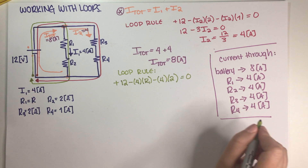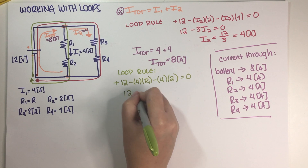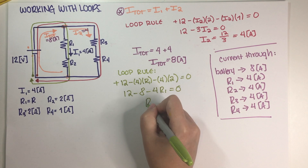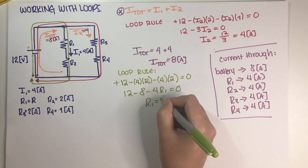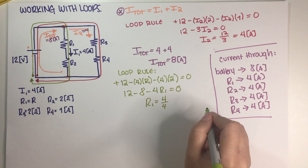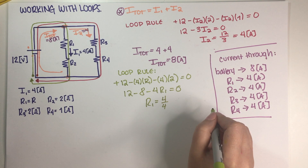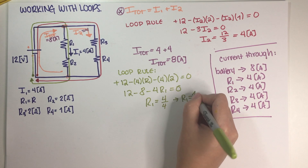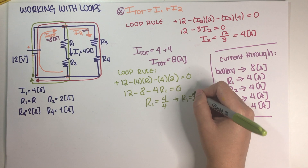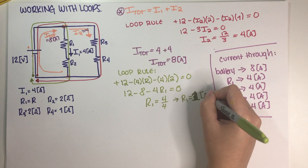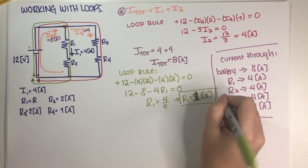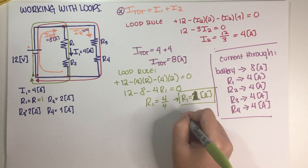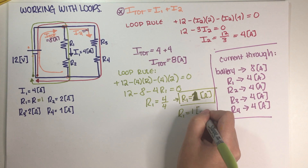So: 12 minus 4·R1 minus 4·2 equals 0, which gives 12 minus 4·R1 minus 8 equals 0. Therefore 4·R1 equals 4, so R1 equals 1 ohm. Final answer for Part B: R1 = 1 ohm.